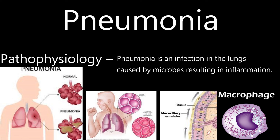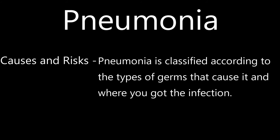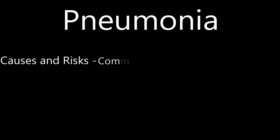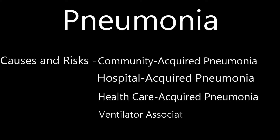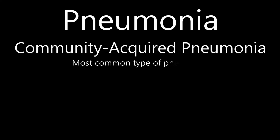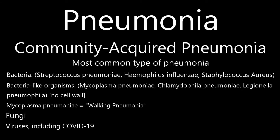In short, a variety of organisms — including bacteria, viruses, and fungi — can cause pneumonia. Pneumonia is classified according to the types of germs that cause it and where you got it from. The types include community acquired pneumonia, hospital acquired pneumonia, healthcare acquired pneumonia, ventilator associated pneumonia, and aspiration pneumonia. Community acquired pneumonia is the most common type and occurs outside of a hospital setting or other healthcare facilities. It may be caused by bacteria, bacteria-like organisms, mycoplasma pneumoniae, fungi, and viruses, including COVID-19.